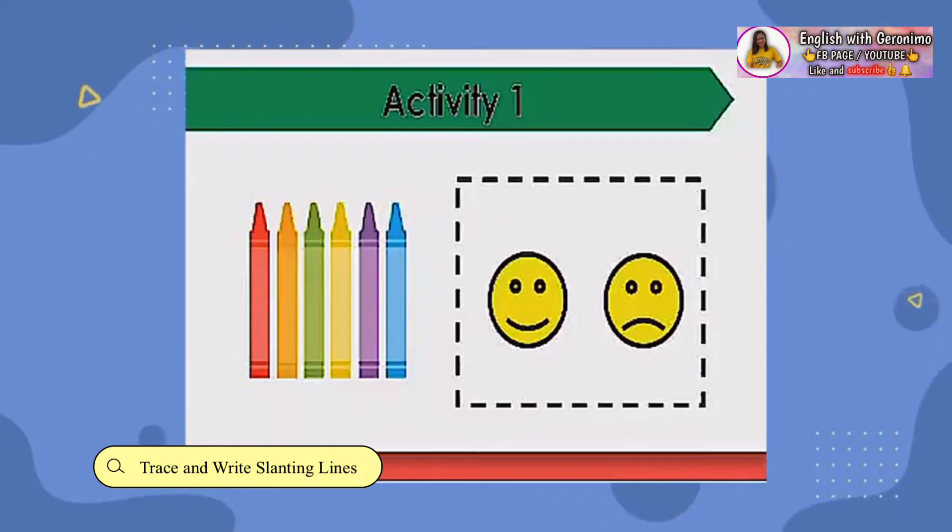Number 2. Is the object showing slanting line or not? What will you circle? Good job! The crayons do not show a slanting line.